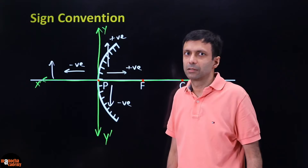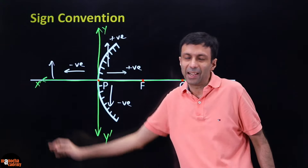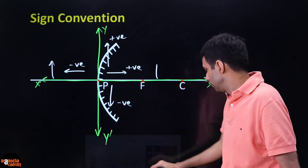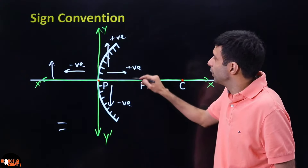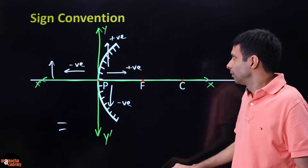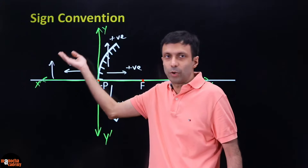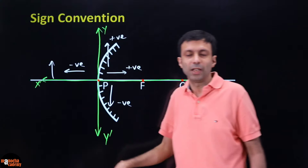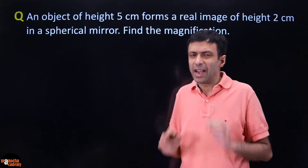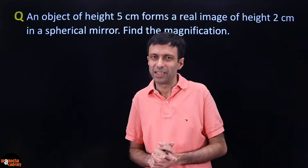For example, if an object is kept 5 centimeters to the left of the pole, it will be minus 5 because it's on the negative x-axis. If an image is formed 4 centimeters to the right, it's plus 4 because it's along the positive x-axis. Similarly, an upright object has positive height, an upright image is positive, and an inverted image has negative height.